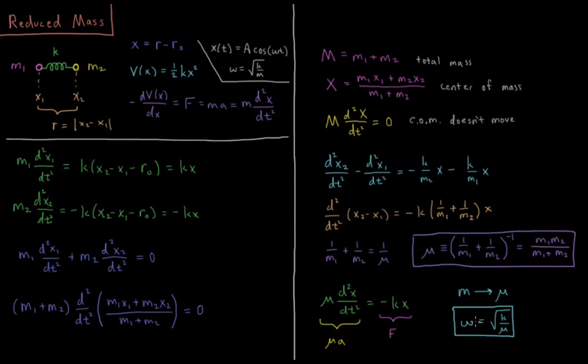Our angular velocity is going to be the square root of k, the spring constant, over mu, the reduced mass, where we've shown that the reduced mass is the product of the two masses, m1 and m2, divided by their sum.